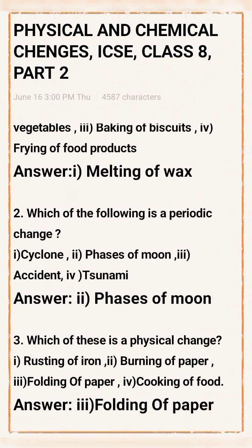Question 2: Which of the following is a periodic change? Option 1: Cyclone. Option 2: Phase of moon. Option 3: Accident. Option 4: Tsunami. Answer: Option 2 — Phase of moon.